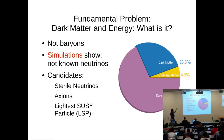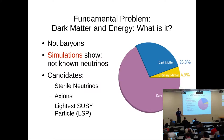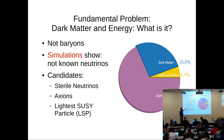Here are a few of the possible candidates. Probably the one that most people talk about these days is the WIMP. But I should point out that in the early 80s, the axion was one of the first particles mentioned in reviews of possible candidates for dark matter.